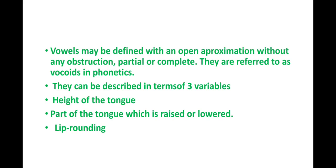So what are vowels? How are you going to define vowels? Vowels may be defined as sounds produced with an open approximation without any obstruction, partial or complete. In phonetics, we say that when a vowel sound is produced, the air is not at all interrupted — there is no obstruction, the air passes easily. That is why the sound produced is called a vowel sound. They can be described in terms of three variables: height of the tongue, part of the tongue which is raised or lowered, and lip rounding.